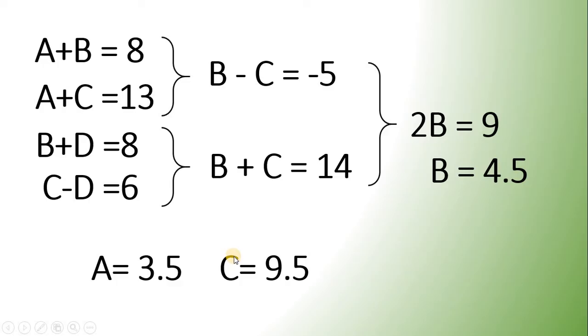Now, since we have the value of C, we can now find the value of D. Since C minus D will give us 6. D must be 3.5. Because 9.5 minus 3.5 will give us 6.